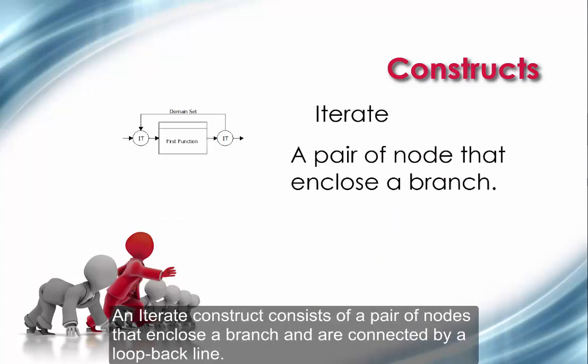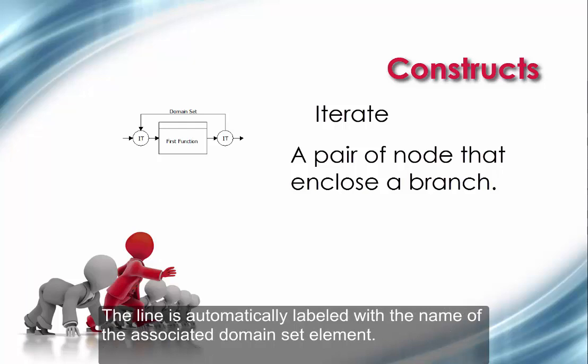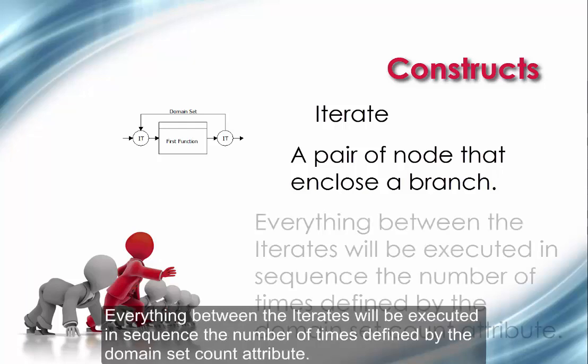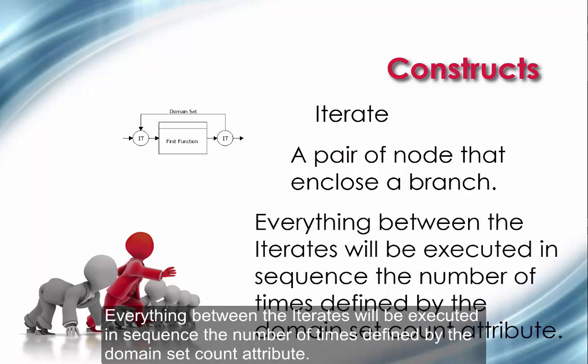An iterate construct consists of a pair of nodes that enclose a branch and are connected by a loop backline. The line is automatically labeled with the name of the associated domain set element. Everything between the iterates will be executed in sequence the number of times defined by the domain set count attribute.